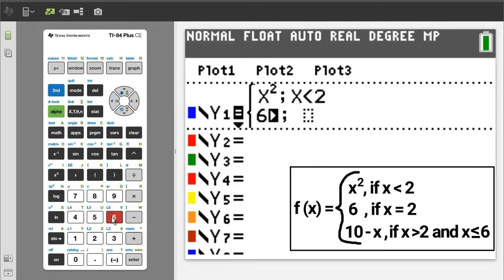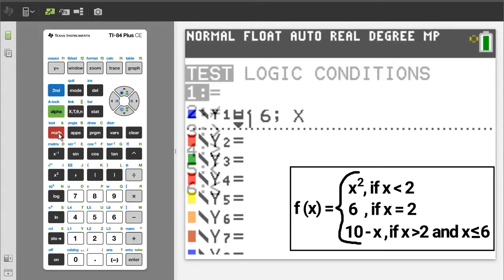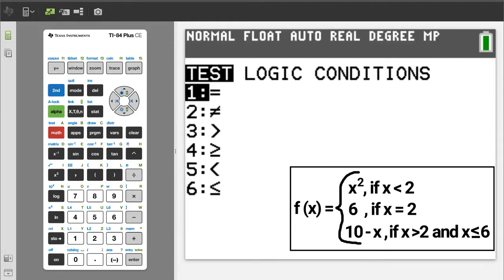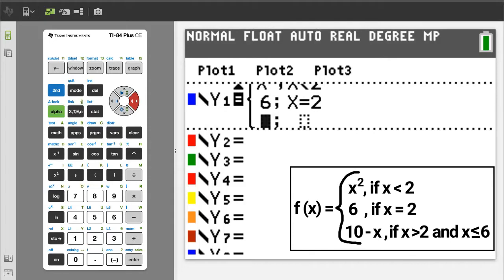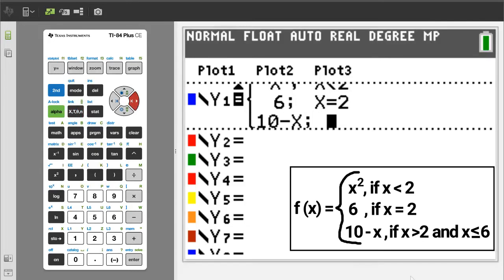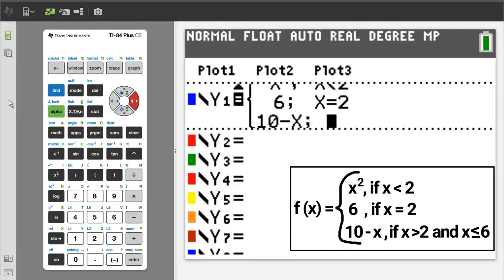We go to the second piece by pressing the right arrow button. Enter a 6. Right arrow button. Enter x equals 2. Press x. Second button. Math button. The equal sign is number 1. Press the 1 button. Then enter a 2. To go to the next piece, press the right arrow button. This is our third and final piece. Enter 10 minus x. Then press the right arrow button.